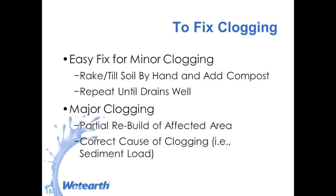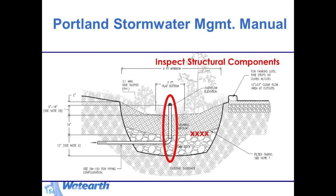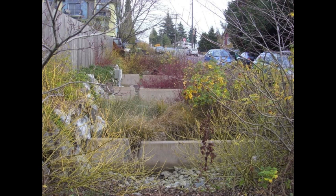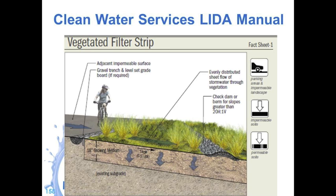If clogging is ongoing or keeps occurring, look at whether there's a heavy sediment load upstream — does something need to be stabilized to avoid additional clogging? If it's major clogging, eventually you may have to do a rebuild. Inspect structural components — whether it's the overflows or erosion control elements — and make sure they're all in good shape. Here's a vegetated swale with weirs in Seattle near the Sea Streets project, and vegetated filter strips at the High Point neighborhood in Seattle — you can see a little bit of weeds coming through that would just be hand removed, and grasses that have been cut back.